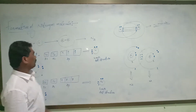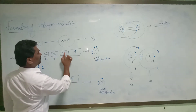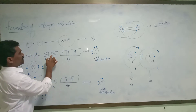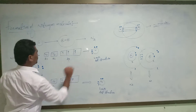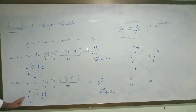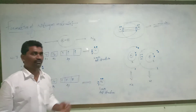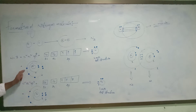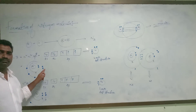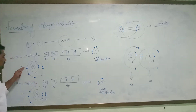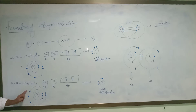We have two paired electrons and three single unpaired electrons. This is the paired electrons, and this is the unpaired electrons. Here also, five electrons are in the last orbit. How many electrons does this nitrogen atom need to become stable? Every atom tries to get eight electrons in the last orbit. So with five electrons, it needs three more electrons to become stable. This nitrogen atom also has five electrons in the last orbit and needs three more to become stable.